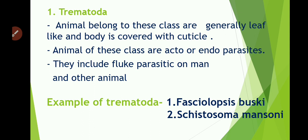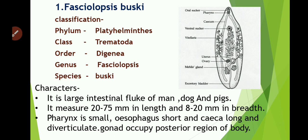The examples of Trematoda are Fasciolopsis buski and Schistosoma mansoni. The first example is Fasciolopsis buski. Its classification: phylum is Platyhelminthes because its body is flat; class is Trematoda; order is Digenea; genus is Fasciolopsis; and species is buski.